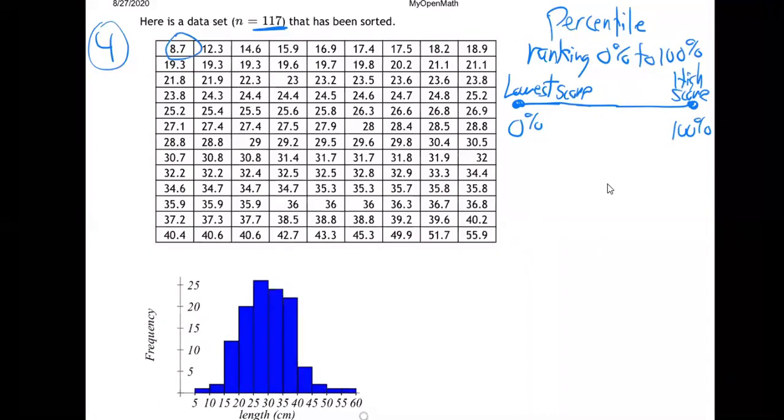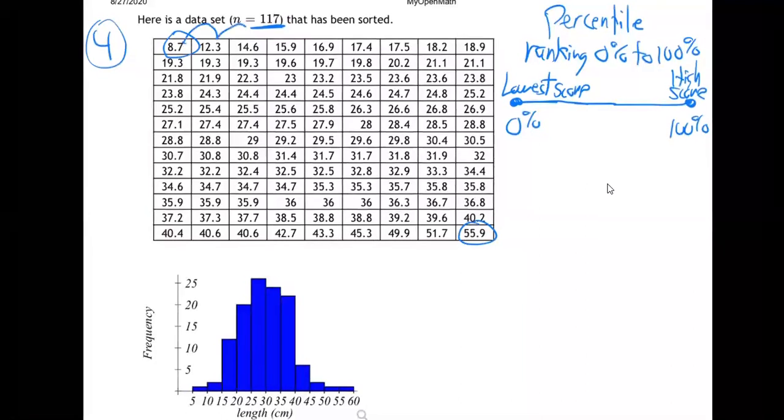So some class took a big quiz and the lowest score is down here at the 0 percent and up here is the highest. The highest score. So what's the lowest score on that quiz? Who got the lowest score? Can you see it? 8.7, right? That's the lowest score. And the highest is down here, right? This data goes in order. Notice it goes in order as you go across, right? 8.7, then 12.3, 14.6. See, it goes up, up, up, and the next row, up, up, up it goes. So the person that did the worst on the quiz got 8.7. The person that did the best on the quiz got 55.9.